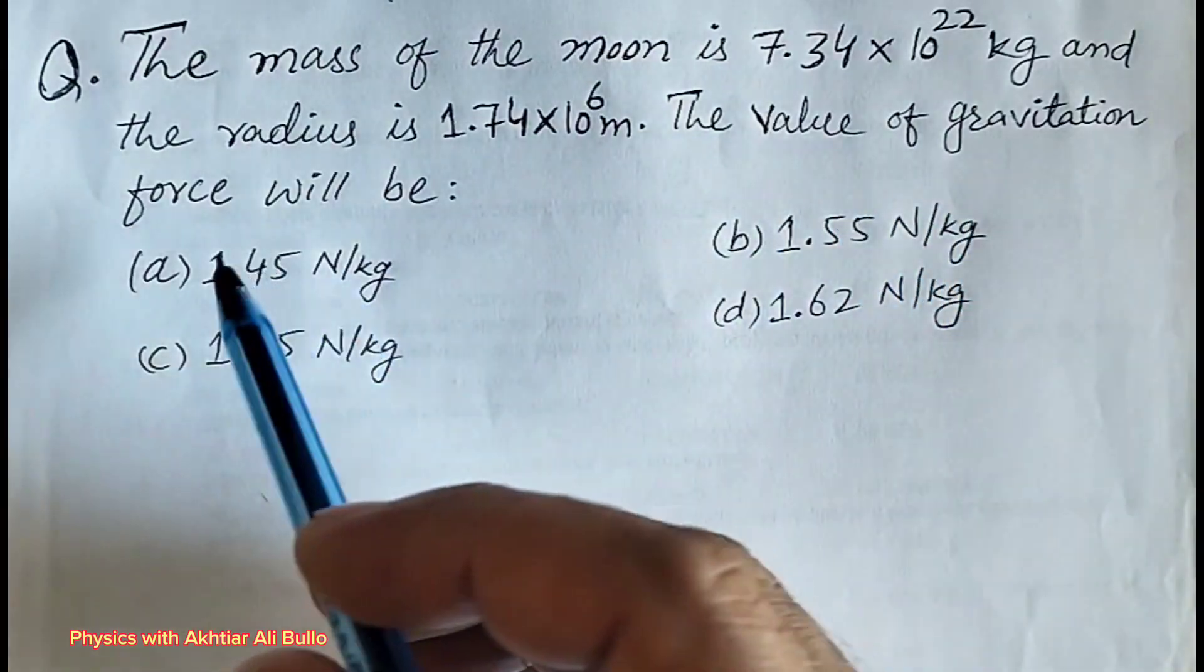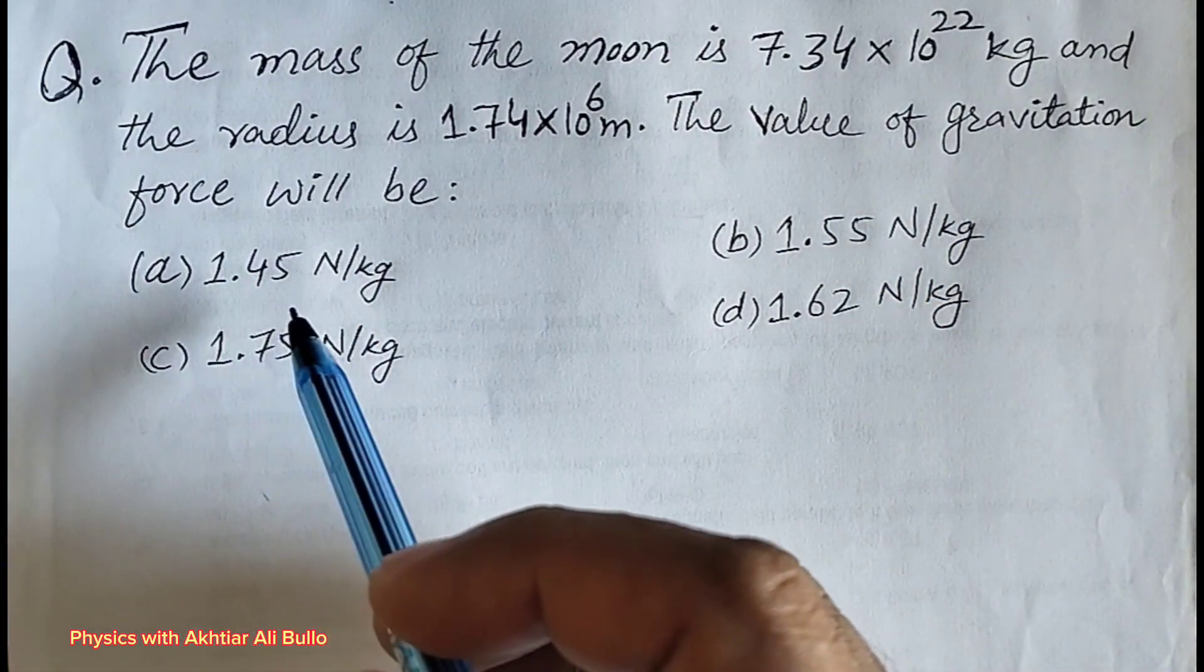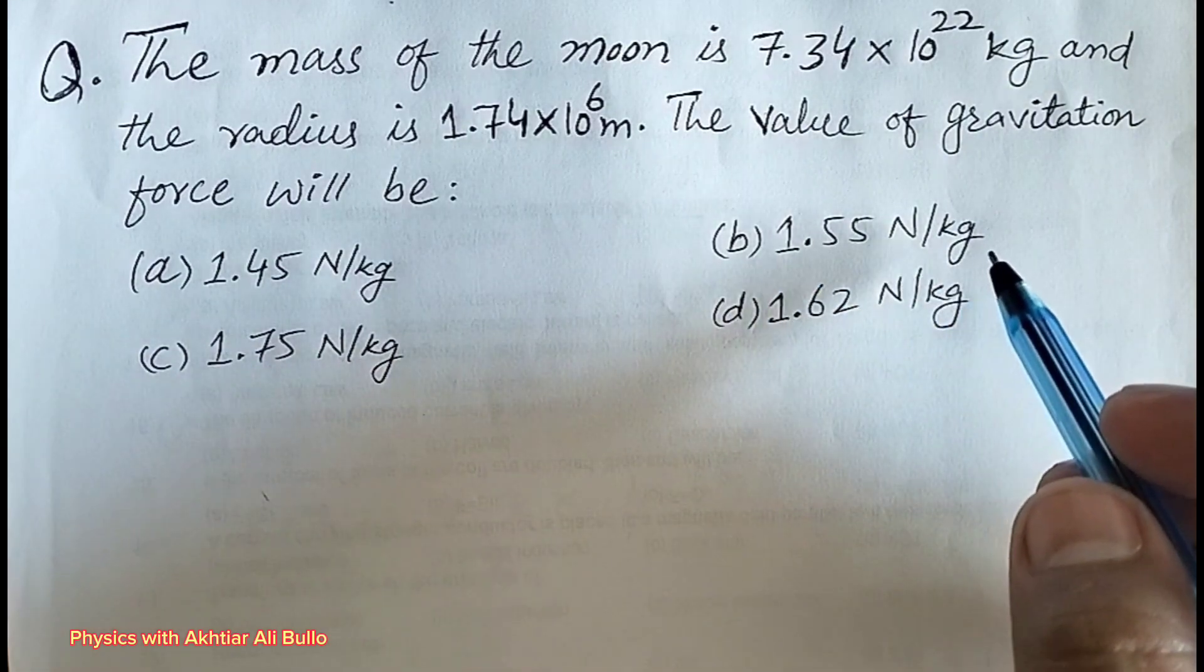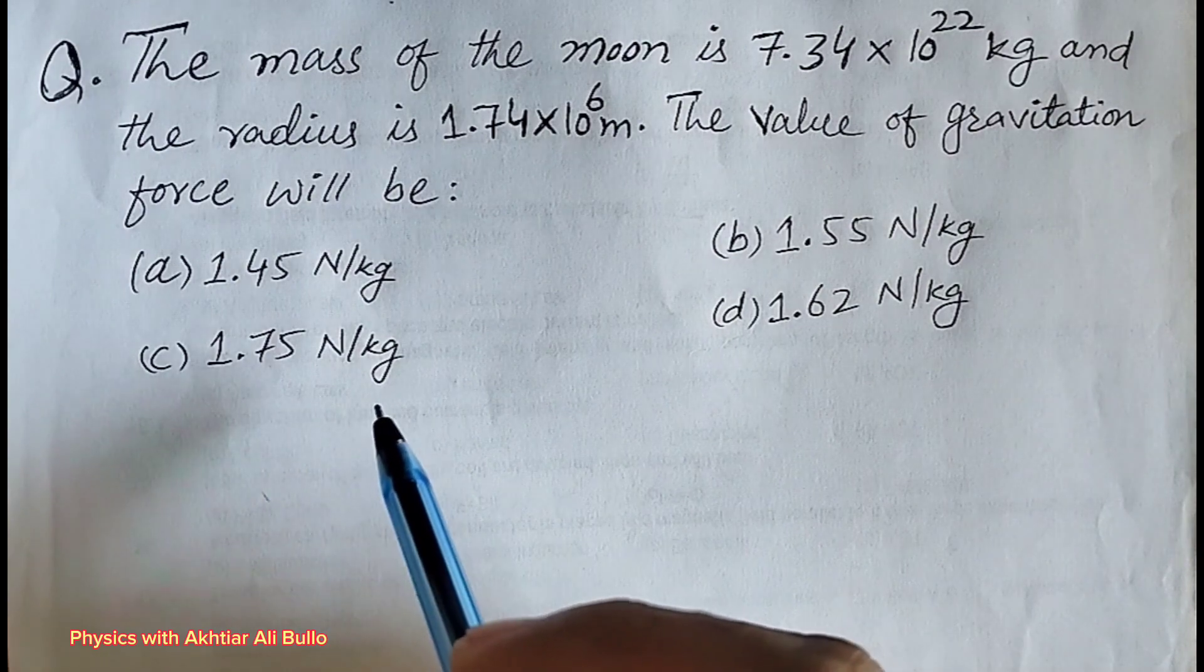The value of gravitation force will be: a 1.45 Newton per kg, b 1.55 Newton per kg, c 1.75 Newton per kg, d 1.62 Newton per kg.